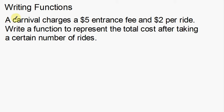Just one quick example. A carnival charges $5 entrance fee to get in and $2 per ride. Write a function to represent the total cost after taking a certain number of rides. Now when we want to write a function, they don't give us a lot — they don't tell us what variables to use or anything to that effect.